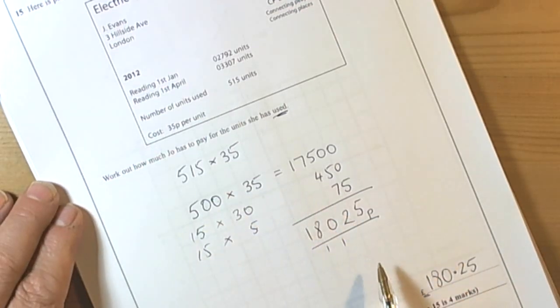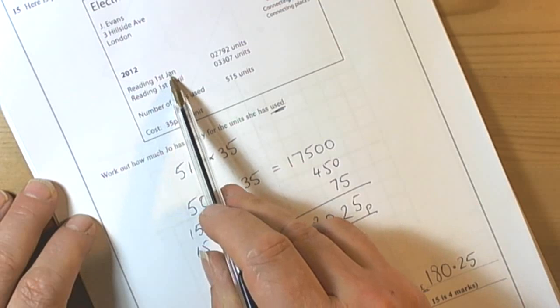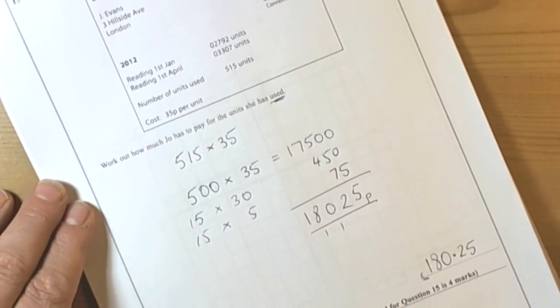Now we should really do a check, because 180 pounds doesn't sound unreasonable for electricity bills if it is for a month or so. Here we got 3 or 4 months, so 180 pounds is reasonable.